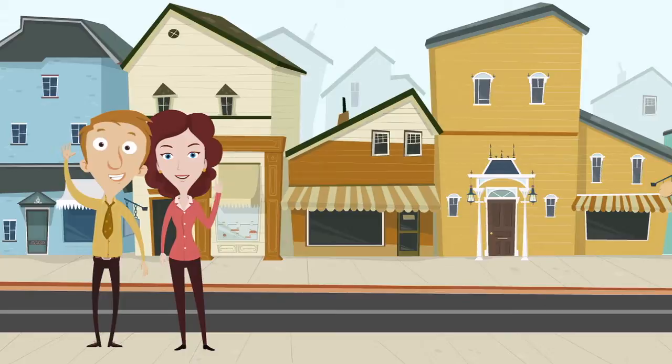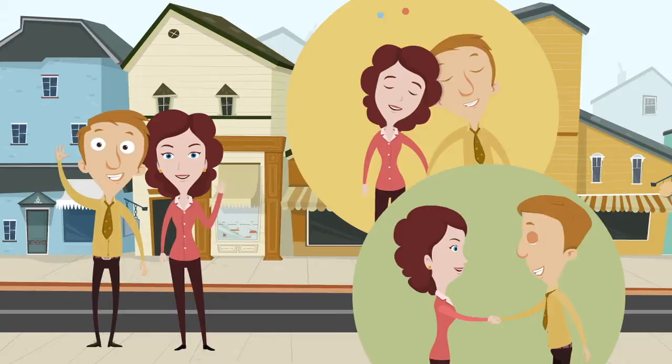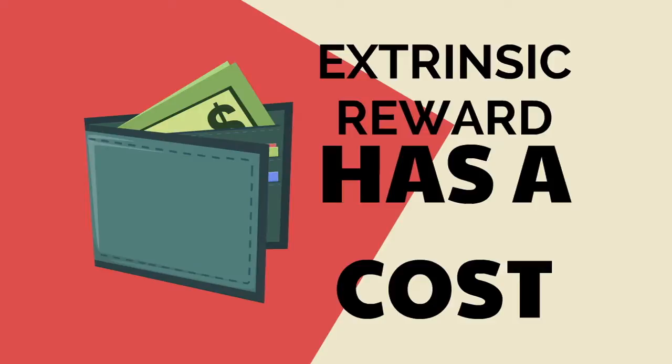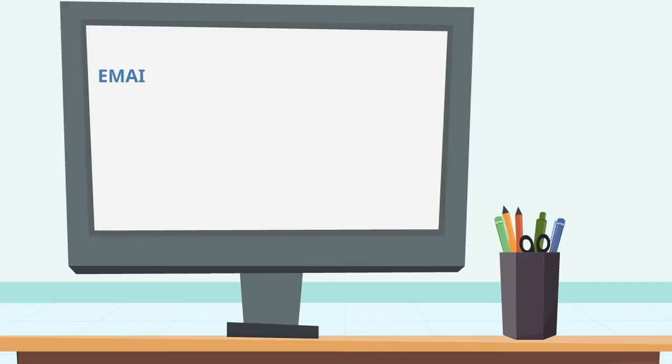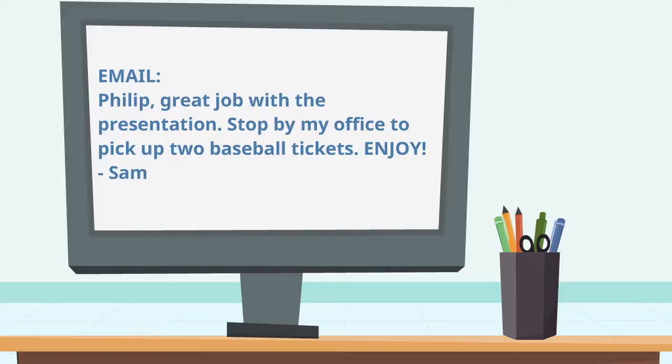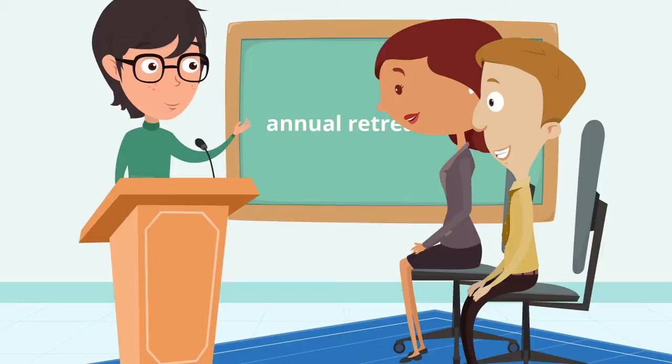Rewards can also be social. Social rewards can only be met through interactions with another person, including things like being loved and respected. Social rewards are broken down into two types: intrinsic and extrinsic. The difference between the two is that extrinsic social rewards cost the person providing the reward. For example, an extrinsic social reward for Philip is being gifted tickets to a baseball game by Sam. Meanwhile, an intrinsic social reward for Philip is feeling like a valued and respected employee.